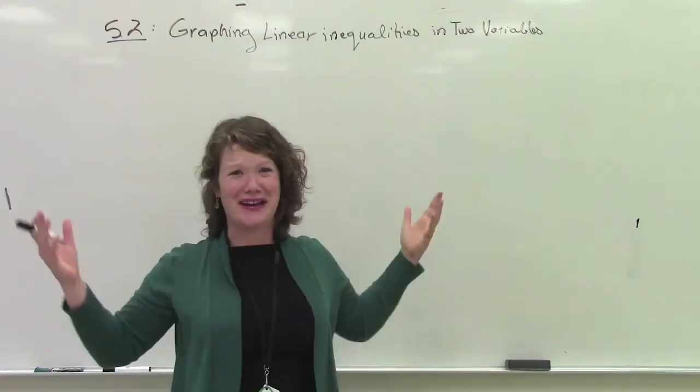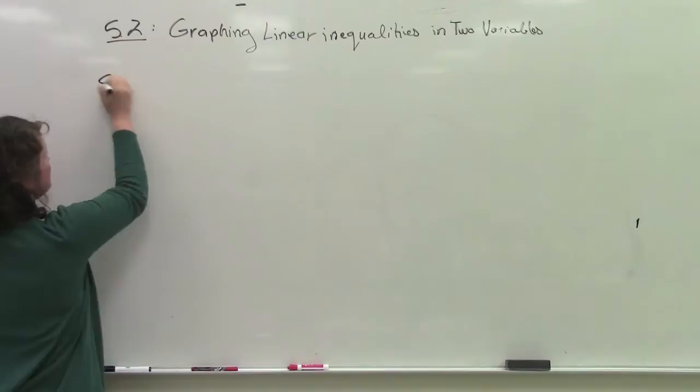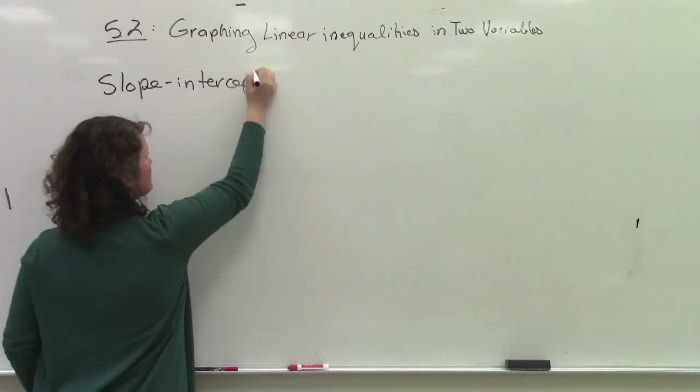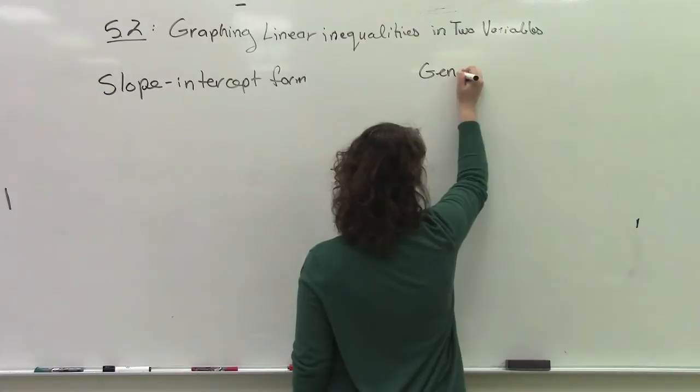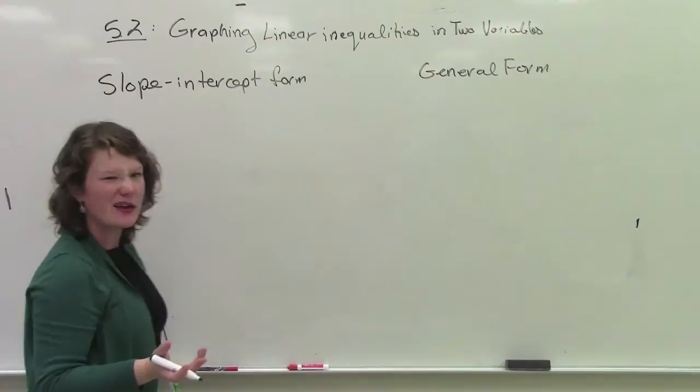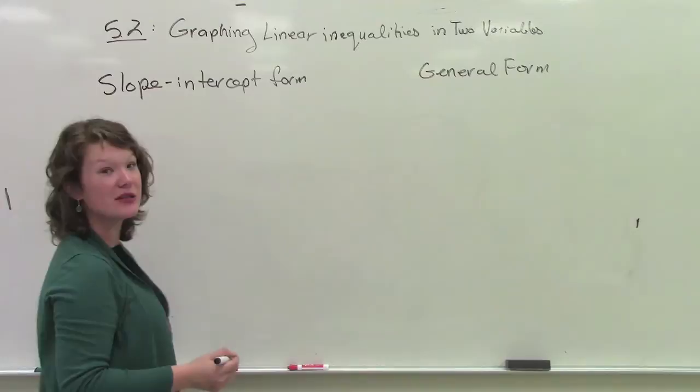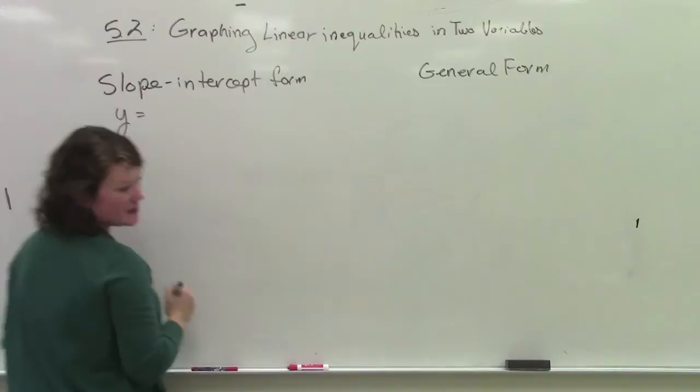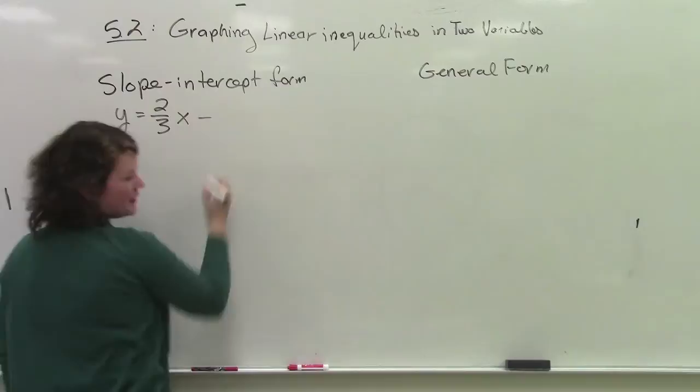First things first. How the heck do we graph lines? We have two different forms. We have the slope-intercept form. And we have the general form. Instead of explaining all the nitty-gritty details of each, I'm just going to give an example of each. Because we should have learned how to do this in grade, I think grade, we start in grade 9, and you definitely do it in grade 10.